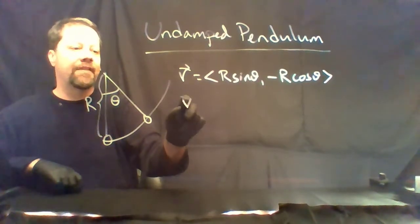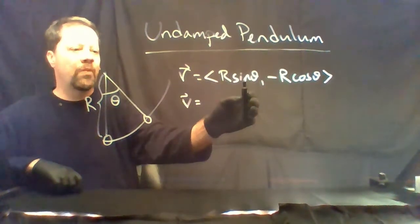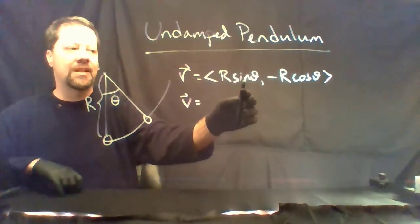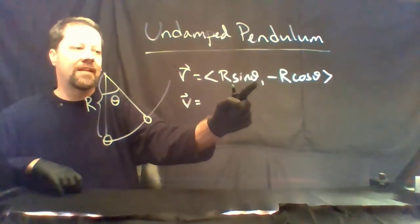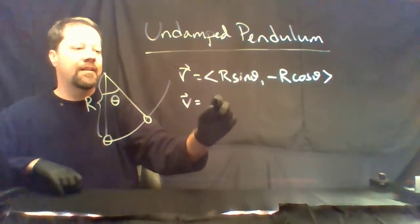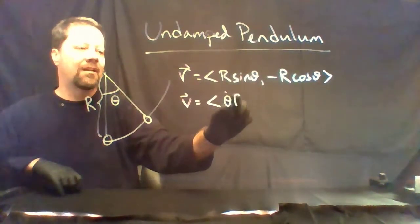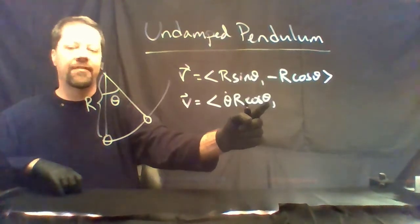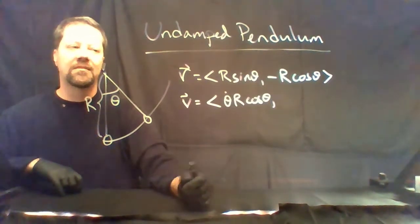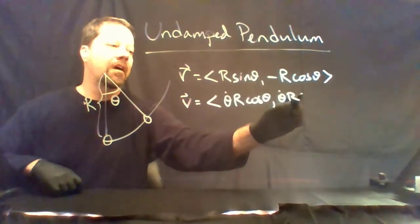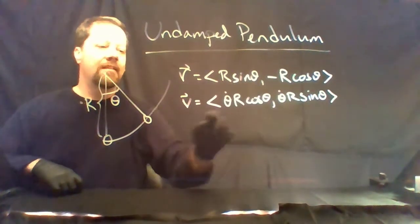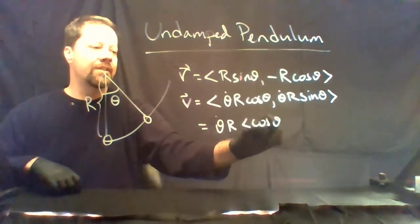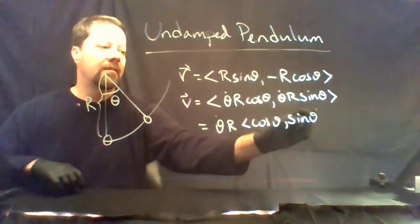The velocity vector is just the derivative of this with respect to time. Theta is a function of time, so when calculating the derivative of sine, we must use the chain rule because we have an inside function and an outside function. This gives us theta-dot r cosine theta. Over here we get theta-dot r sine theta, and we factor theta-dot and r out, leaving just the unit vector (cosine theta, sine theta).